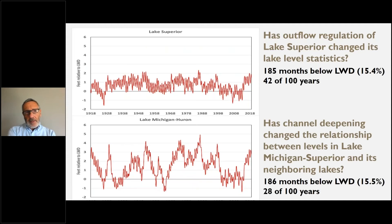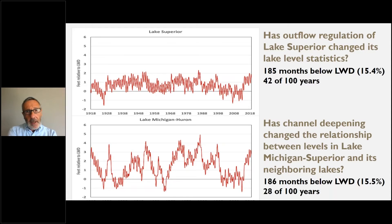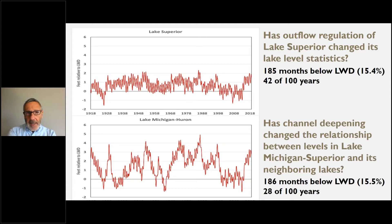These two plots show the monthly average lake level since 1918 relative to the low water datum for the upper lakes. Over 15% of the time during the past century, lake levels fell below the low water datum. This happened in 42 years for Lake Superior and 28 years for Michigan-Huron. That does not meet the goal of setting a datum so low that water level will seldom fall below it, and indicates that the low water datum should have been set even lower in 1933.